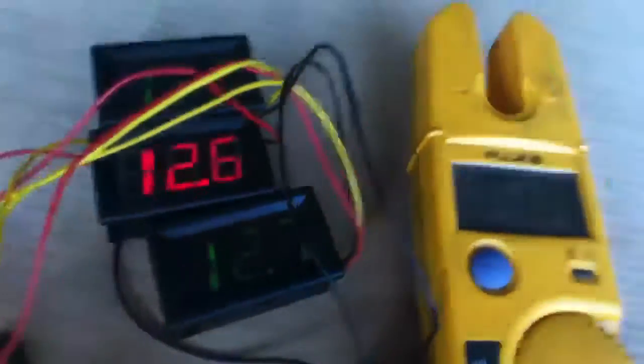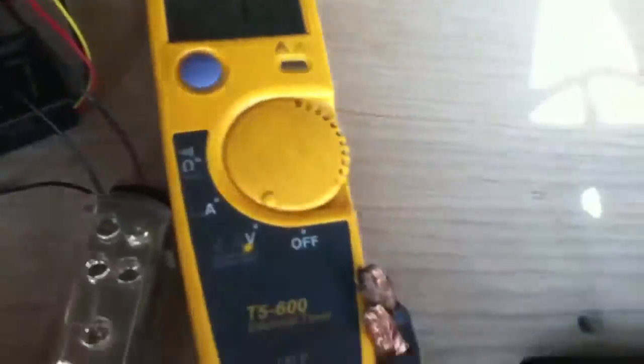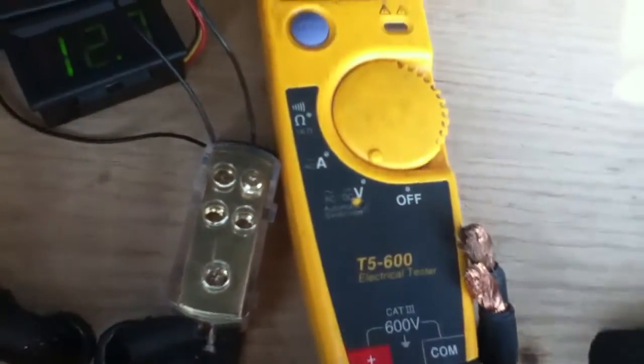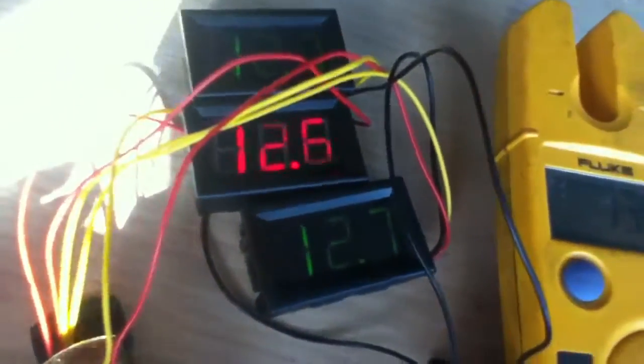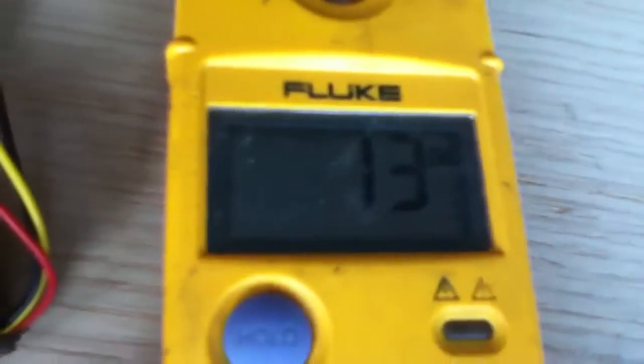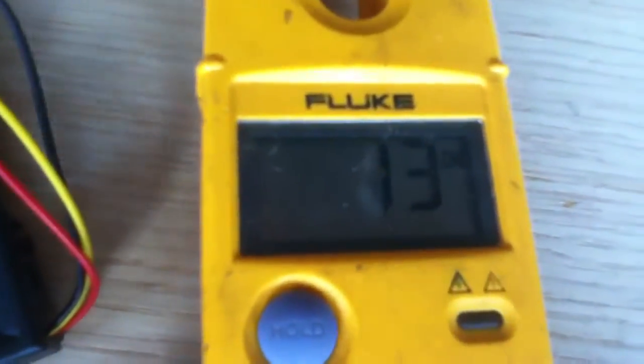Alright, got these cheap eBay voltmeters and my Fluke T5-600. Got it pushing there real nice for the inputs. Got some blocks. 12.7, 12.6, 12.7. That one's reading 13, that's going back from 12 to 13 because it